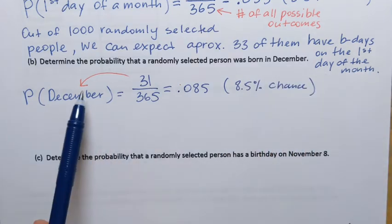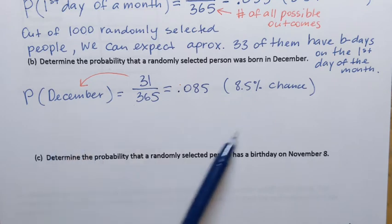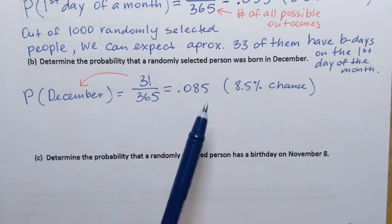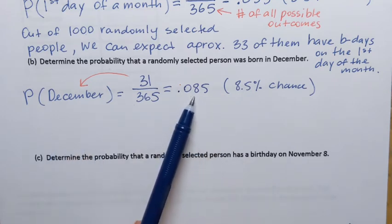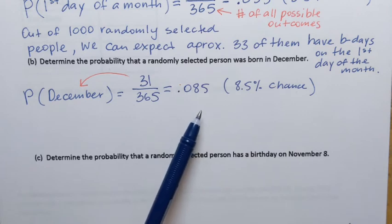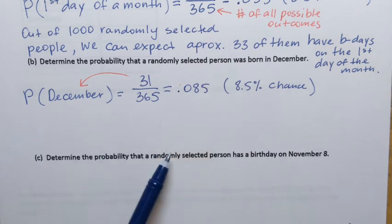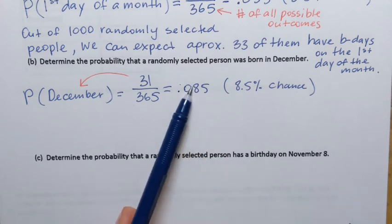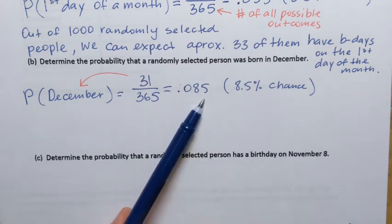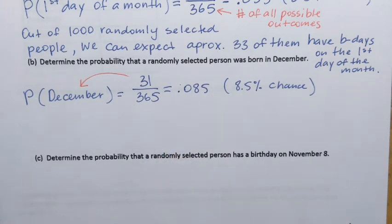To interpret this result: out of 1,000 randomly selected people, we can expect approximately 85 of them to have birthdays in December.